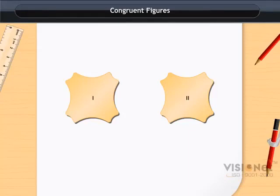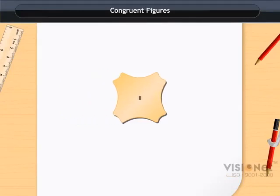Trace one of the figures and place it over the other. If the figures cover each other completely, they are congruent. Clearly figure 1 is congruent to figure 2. We use the symbol of congruence as shown.